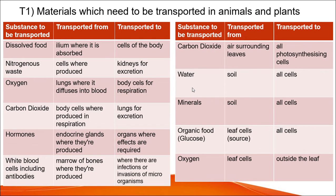Materials needed to be transported in animals and plants vary. In a table, on the left we have substances to be transported in animals, and on the right, substances transported in plants. Dissolved food must be transported from the ileum where it is absorbed to cells of the body. Nitrogenous waste must be transported from cells where it was produced to the kidneys for excretion. Oxygen must be transported from the lungs where it diffuses into blood, and transported to body cells for respiration.